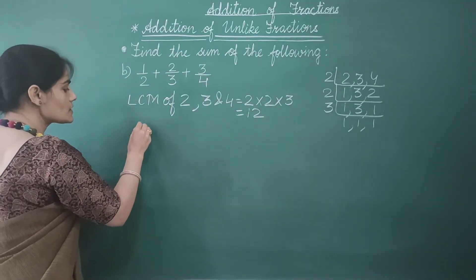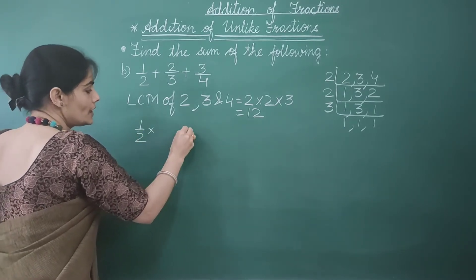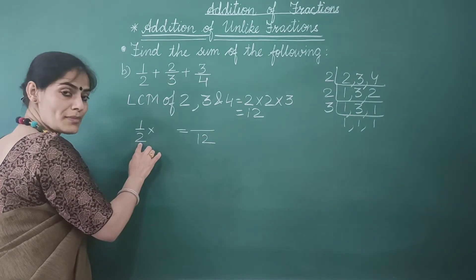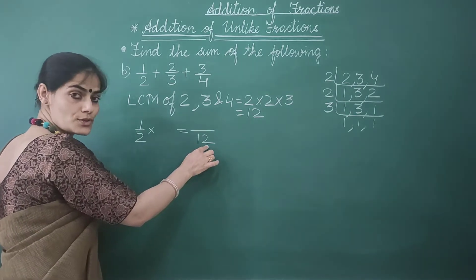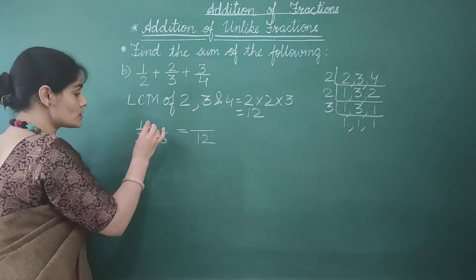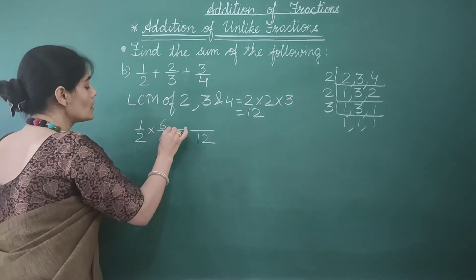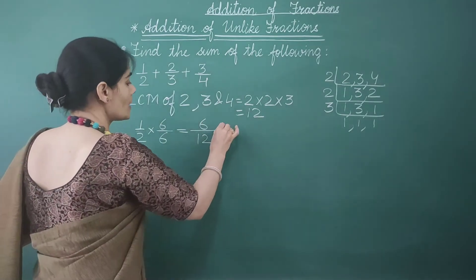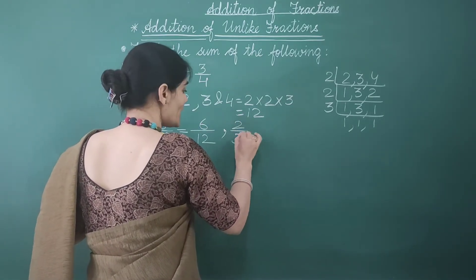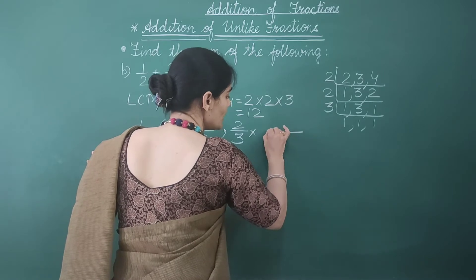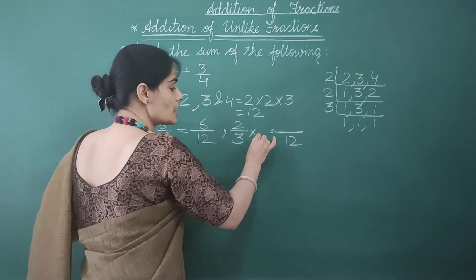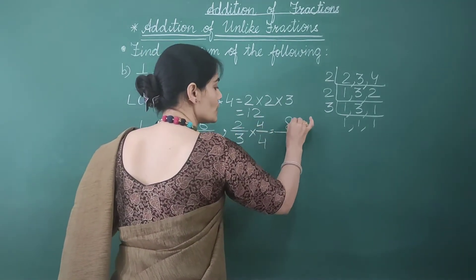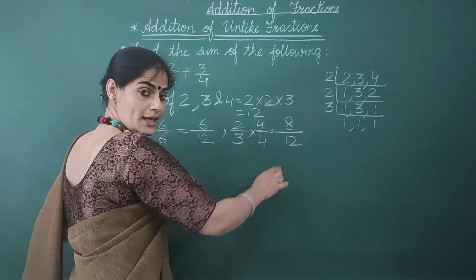Let's convert 1 by 2 to an equivalent like fraction with denominator 12. 2 times 6 gives 12, so the numerator is also multiplied by 6: 1 times 6 equals 6, giving us 6 by 12. For the next fraction, 3 times 4 gives 12, so the numerator is also multiplied by 4: 2 times 4 equals 8, giving us 8 by 12.